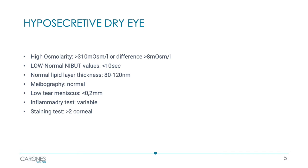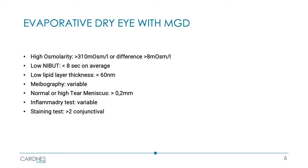In case of hyposecretive dry eye, we will find high osmolarity, low or normal NIBUT values, a normal lipid layer thickness, and the meibomian glands have a normal or only slightly altered morphology. The tear meniscus value is less than 0.2 mm. The InflammaDry test can be negative or positive, and the corneal staining usually shows impairment of the ocular surface at the corneal level.